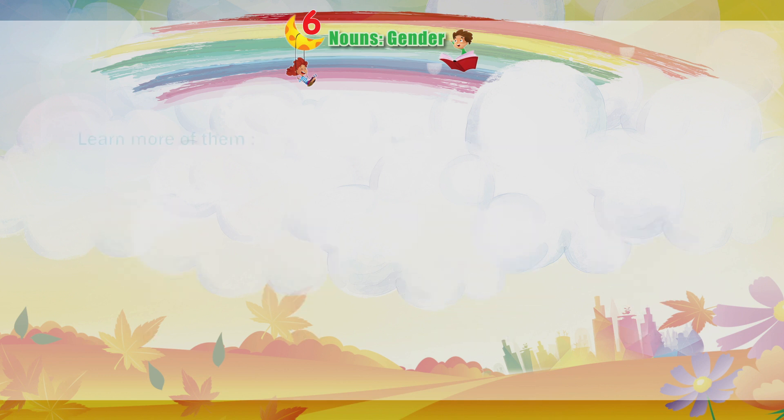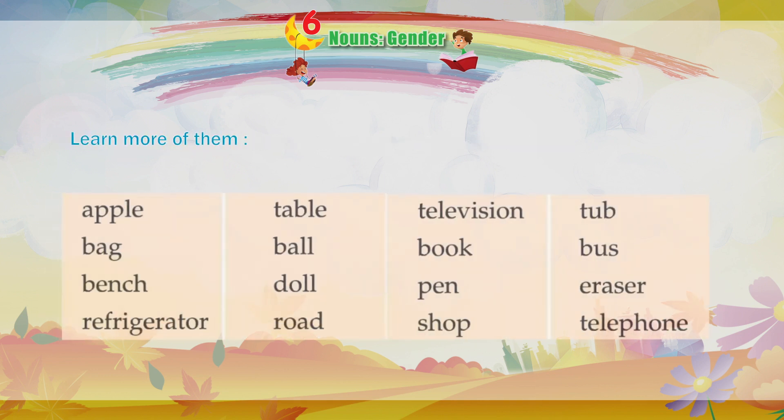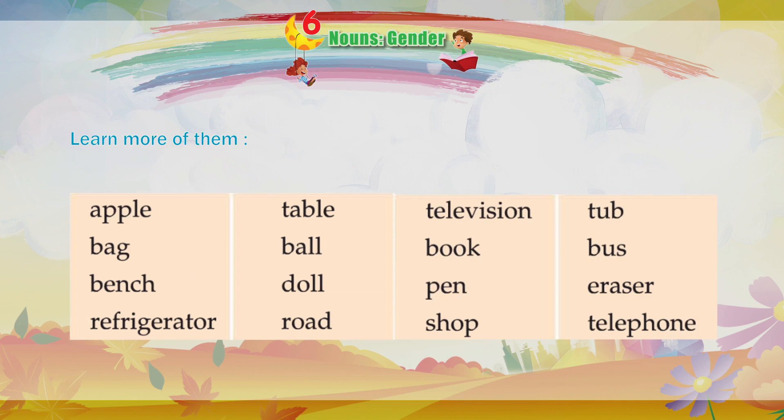Learn more neuter gender words: Apple, Bag, Bench, Refrigerator, Table, Ball, Doll, Road, Television, Book, Pen, Shop, Tub, Bust, Eraser, Telephone.